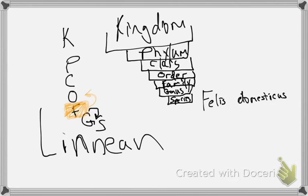The family Felidae is still pretty large because you've got all kinds of different cats. But when you get down to Felis and then Felis domesticus, you get very, very specific about what kind of cat we're talking about. So that's a cat — well, what kind of cat? It's a small cat. There are lots of small cats — which specific cat? That's why we go through this classification.